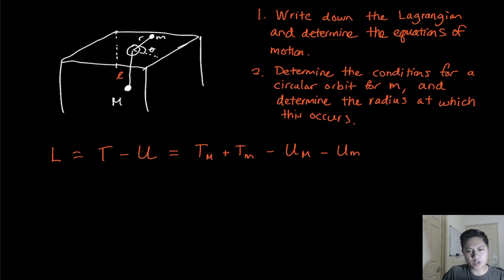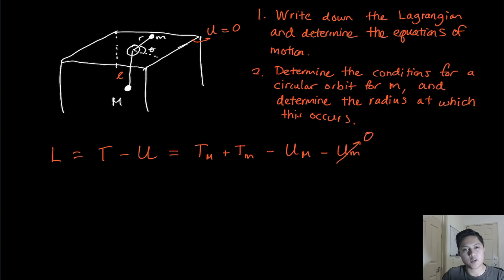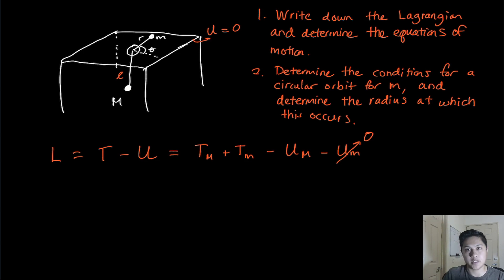To simplify, we're going to set the potential energy of the table to be zero. This means the potential energy of the smaller mass equals zero as well. This is an arbitrary choice — you can pick the zero of the potential energy anywhere — but for the simplicity of this problem I'm going to pick it to be at the table itself.